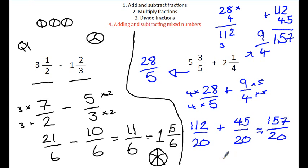If we want to write that as a mixed number. We've got 20, 40, 60, 80, 100, 120, 140. So that is 7. And 17 over 20.